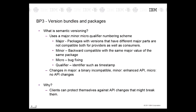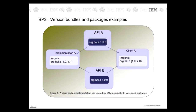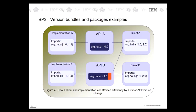Let's look at a few examples. Figure 3 shows two providers of an API bundle where the API is the same version. In OSGI, these two providers are considered equivalent, so both client A and implementation A can use either of the API bundles. Figure 4 shows API bundle B has a minor version change. Client A can still use API A or API B, but implementation A will no longer be able to use API B because its version range specifies from 1.0 up to but not including 1.1. Implementation B can only use API B because it specifies the version range from 1.1 up to but not including 1.2.